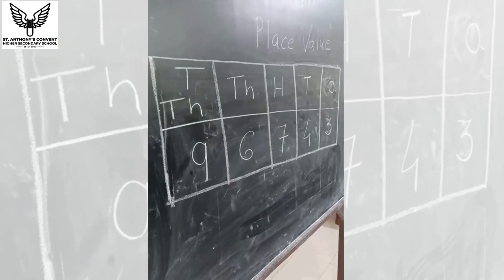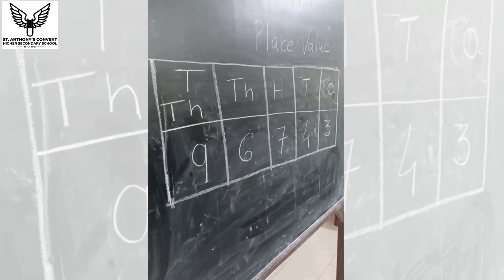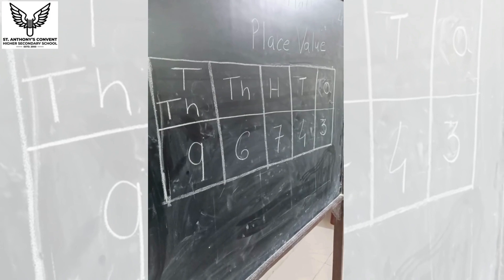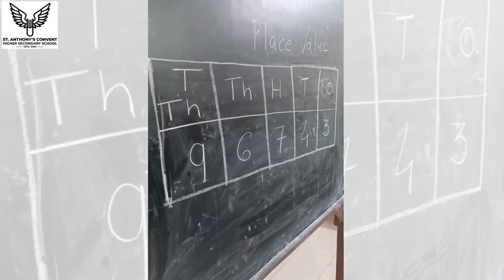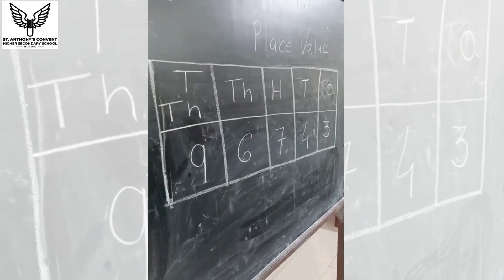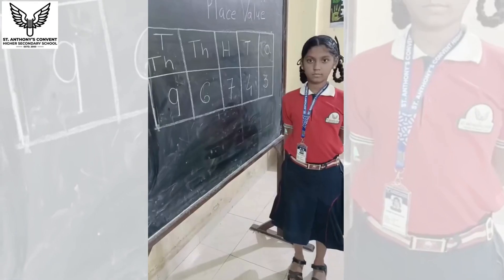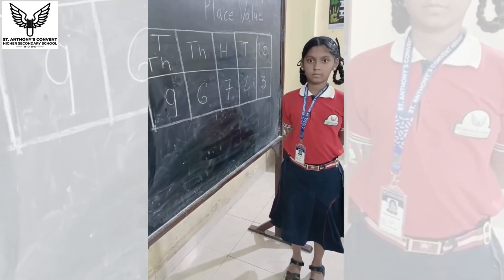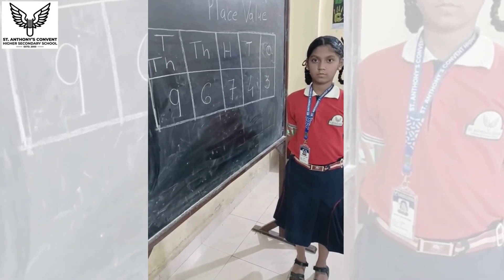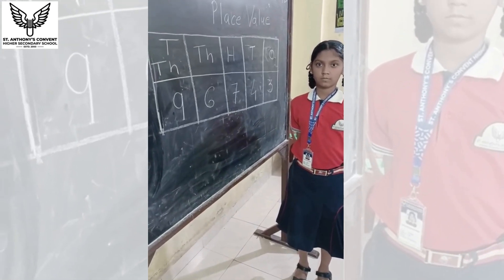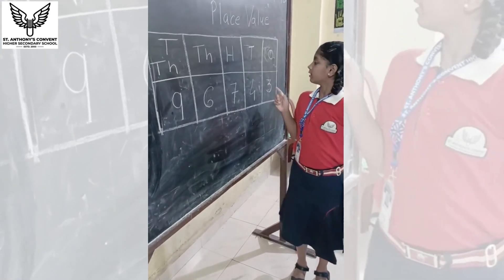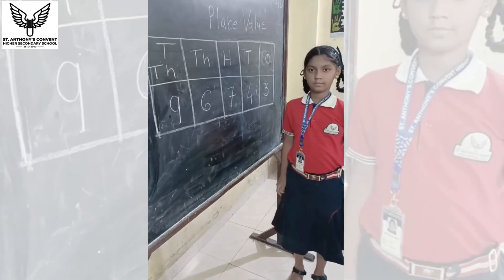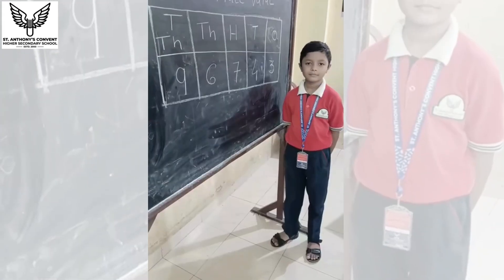So here the number is 96743. Aradhyaya, now tell me what is the place value of the number at one's place? Three. Good Aradhyaya.